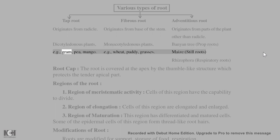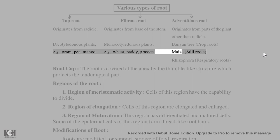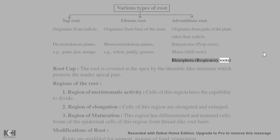Examples of tap root plants: gram, pea, mango. Fibrous root examples: wheat, paddy, grasses. Adventitious roots include: maize stilt roots, rhizophora respiratory roots. Banyan tree has prop roots as adventitious roots.